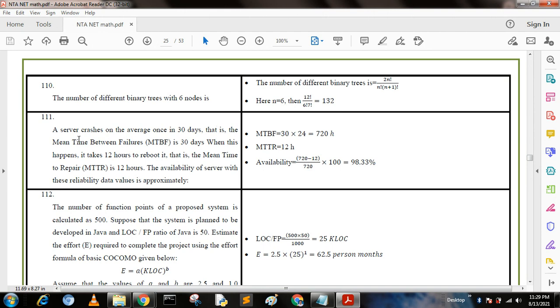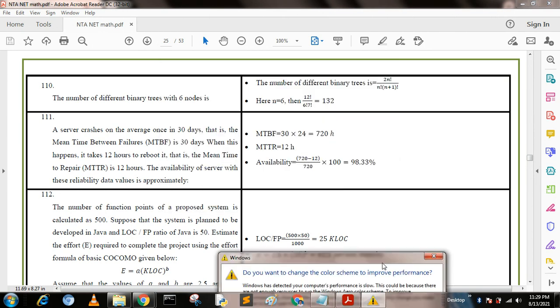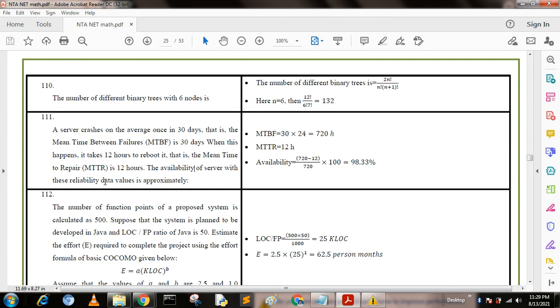Next question: A server crashes on average once in 30 days, that is the Mean Time Between Failures (MTBF) is 30 days. When this happens, it takes 12 hours to reboot, that is the Mean Time To Repair (MTTR) is 12 hours. What is the availability of the server with this reliability data? The MTBF equals 30 times 24 equals 720 hours. We convert days to hours. MTBF is 720 hours and MTTR is 12 hours. We calculate: (720 minus 12) divided by 720 times 100 equals 98.33 percent.